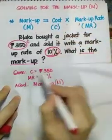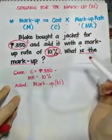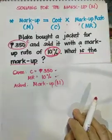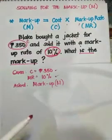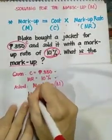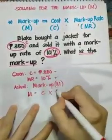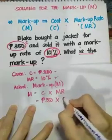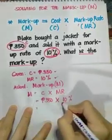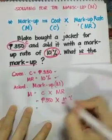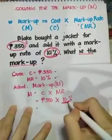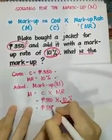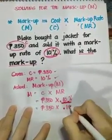Both the cost and the markup rate are given, so it will be easy for us to solve the problem. Let's solve it using the formula M equals C times MR. Our C is 350 pesos multiplied by 10%. But we have to change 10% into a decimal — you move the decimal point two places to the left, so it becomes 0.10.